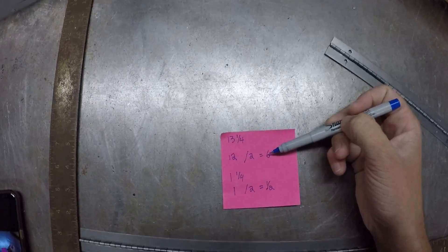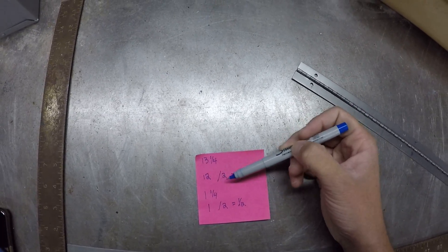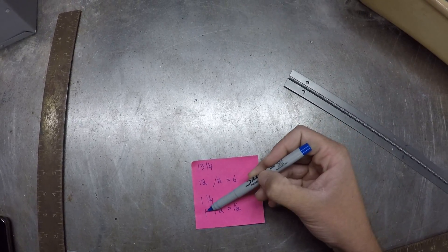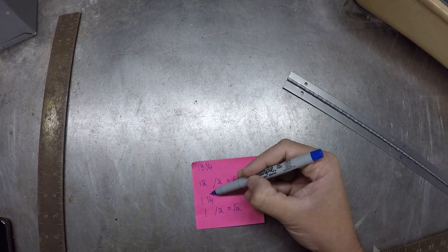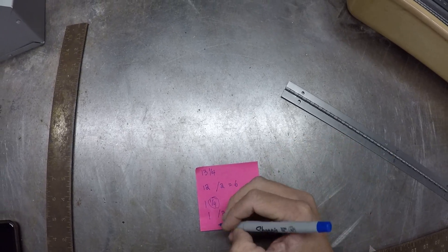So one divided by two is one half. So now I know that six is going to get me halfway for 12. I know that a half inch is halfway for one. The only thing that I'm missing now is that quarter inch.